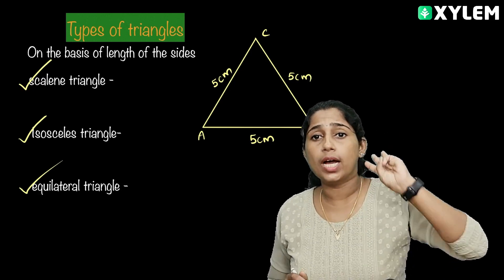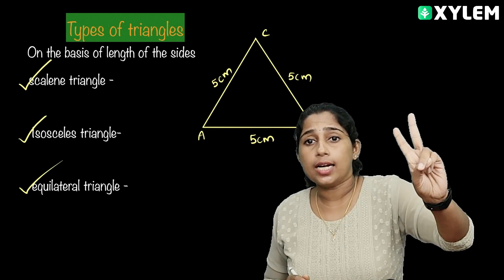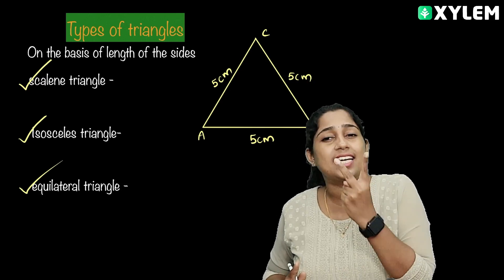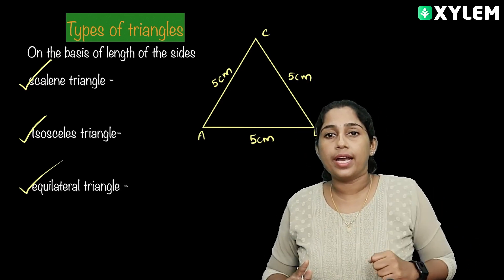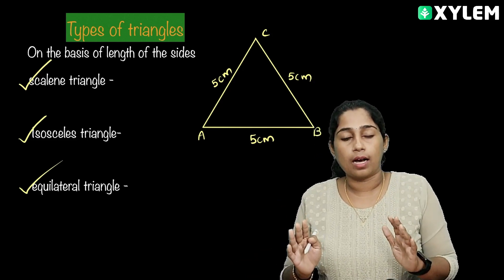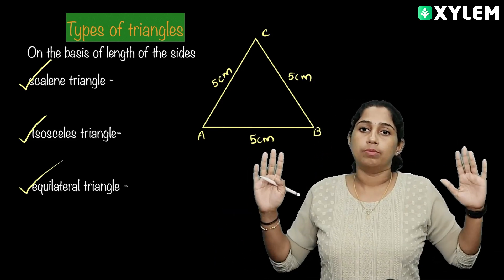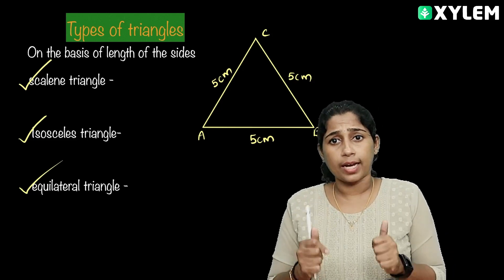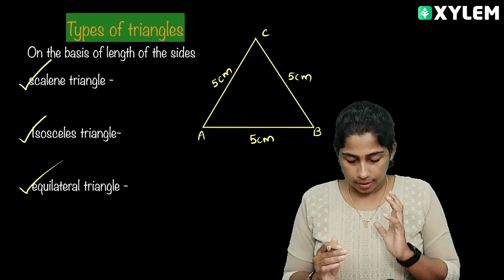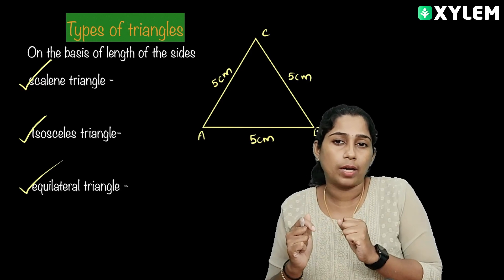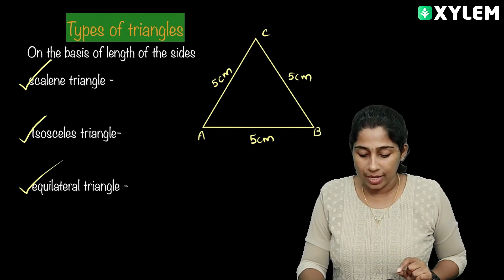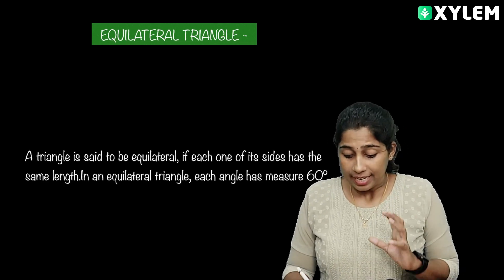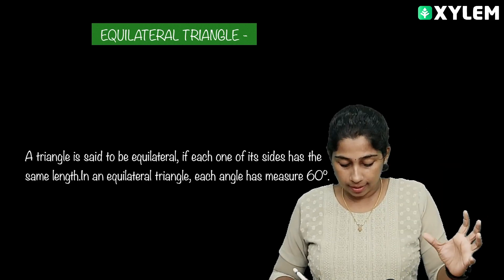To classify: a Scalene Triangle has all different side lengths. An Isosceles Triangle has two sides the same. And an Equilateral Triangle has all sides equal. A triangle is said to be equilateral if each of the sides has the same length.